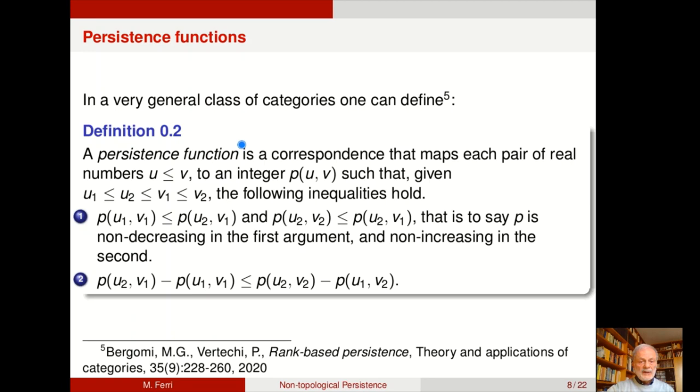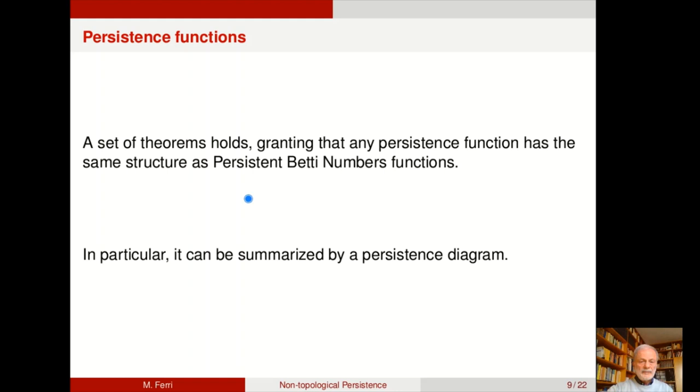Persistence function is defined as a function, as a correspondence which maps each pair of real numbers u less than or equal to v to an integer in such a way that those two properties hold. They were the properties which can be proved for persistent Betti number functions. But here they become part of the definition itself of these functions. So it's possible to have out of them persistence diagrams. And so to have bottleneck, Wasserstein distances, stability, classification, retrieval, all sorts of things that we generally do with normal persistence.